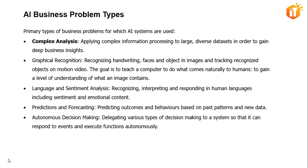The third business problem type is language and sentiment analysis, which involves recognizing, interpreting, and responding in human language, including sentiment and emotional content. The fourth is predictions and forecasting — predicting outcomes and behaviors based on past patterns and new considerations. Finally, the fifth is autonomous decision making, which is delegating various types of decision making to a system so that it can respond to events and execute functions autonomously.